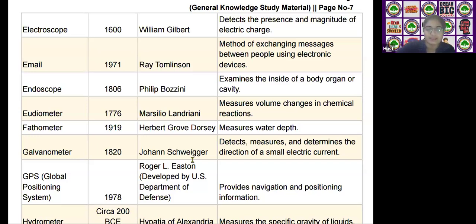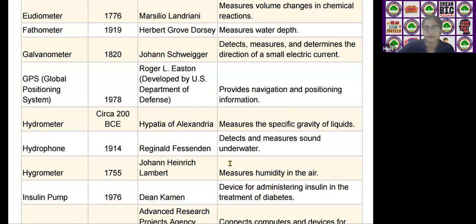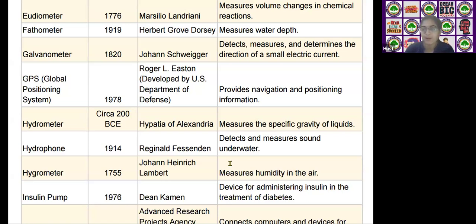The next scientific device is GPS, which stands for Global Positioning System. It was invented by Roger L. Easton and developed by the US Department of Defense in the year 1978. It is used to provide navigation and positioning information.